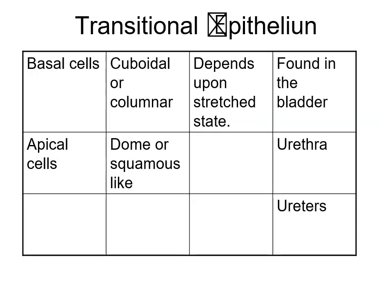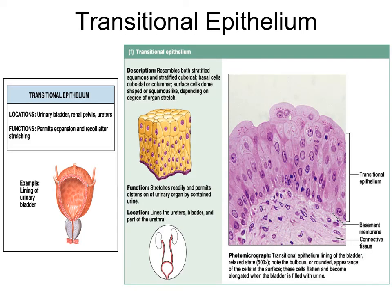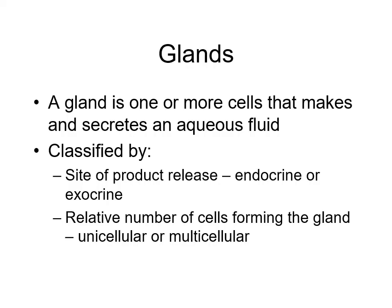Transitional epithelium is unique - when at rest the cells are piled on each other, but when the bladder is filled they stretch out and look different. They kind of look cuboidal when relaxed and then stretch out when filled. These are found in the bladder, the urethra, and the ureters.